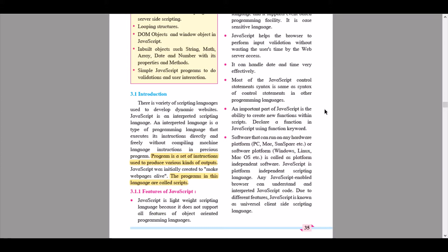Or software platform Windows, Linux, Mac OS, etc. is called as platform independent software. JavaScript is platform independent scripting language.